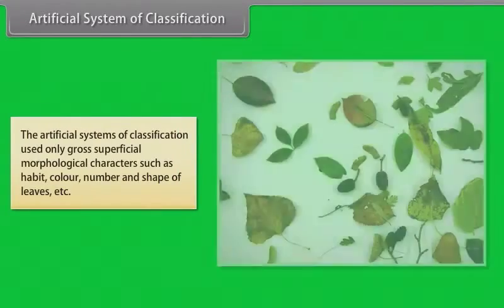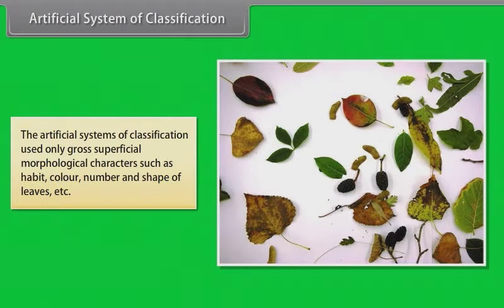The artificial systems of classification used only gross superficial morphological characters such as habit, color, number and shape of leaves etc.